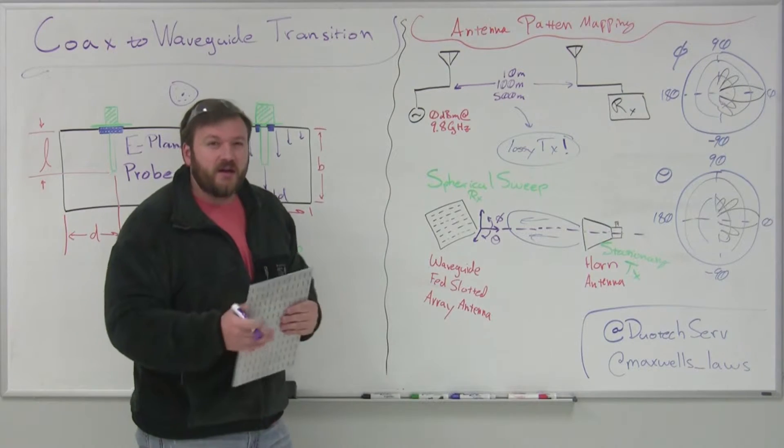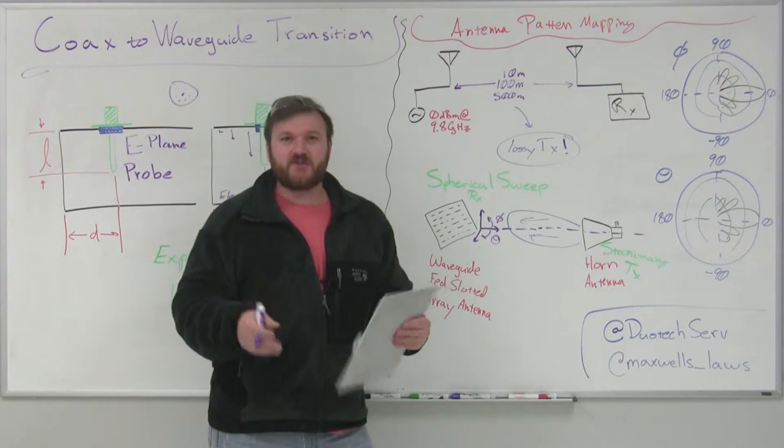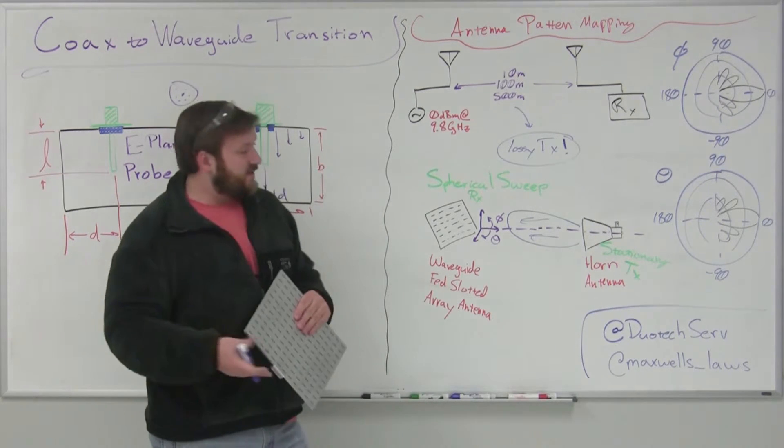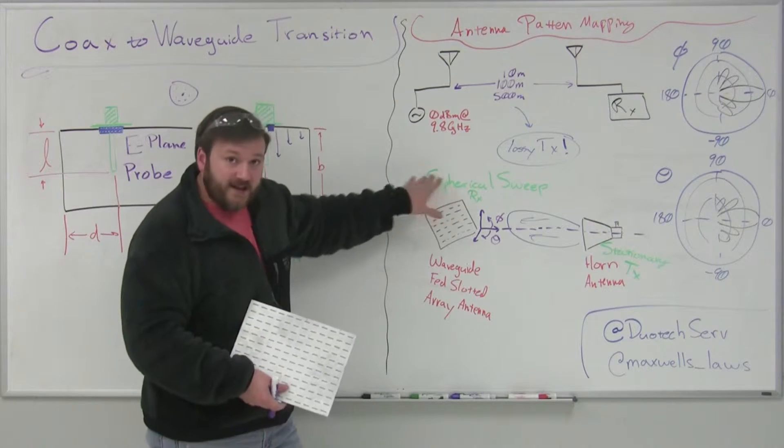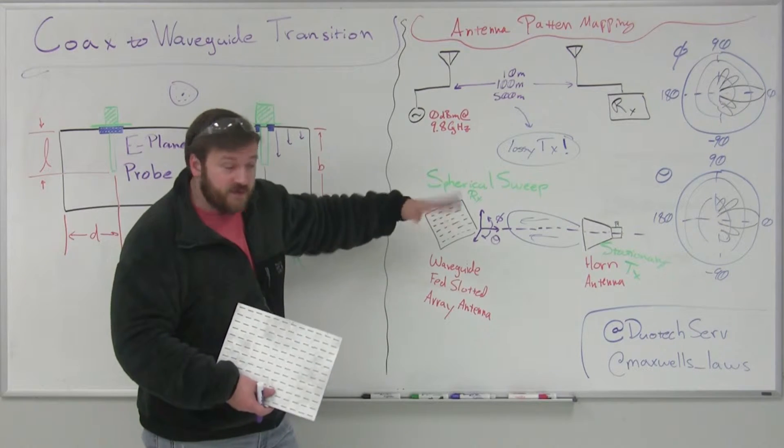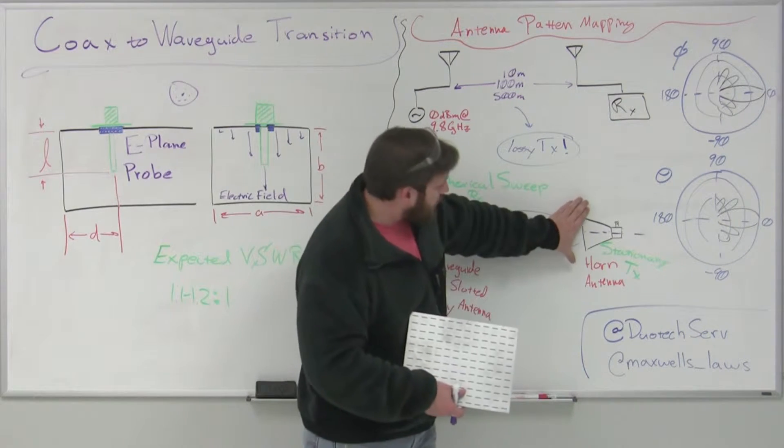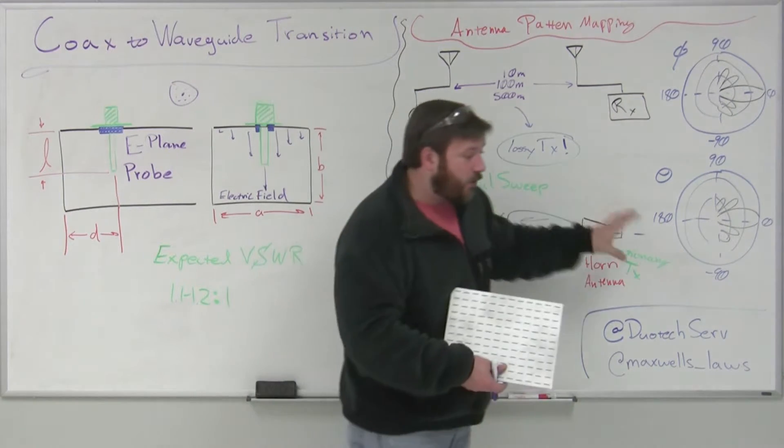I don't have to worry about phase information in order to get a good idea, a good measurement, a good pattern map of the antenna. So what I'm doing is setting it up at a distance, and I'll have an azimuth, an elevation that I'll move this in. And I will be transmitting from a horn antenna.